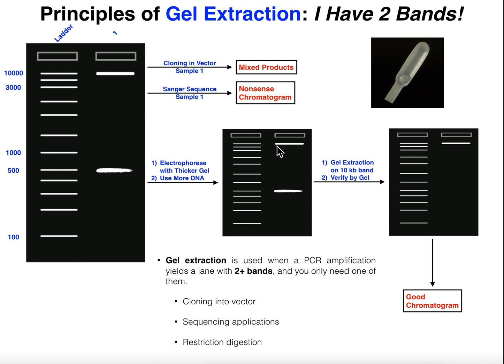What I want to do is physically cut out this band so that I'm only dealing with this one, and this bottom one at 500 base pairs I'm just going to leave behind. I only want to isolate this top band. There are a couple of general ways to do this. One way is to actually physically cut out this band — some people will use a razor or different tools — and you deal with it from there.